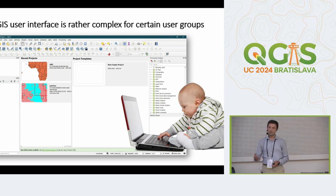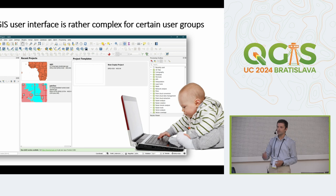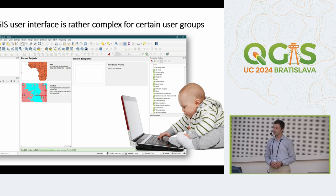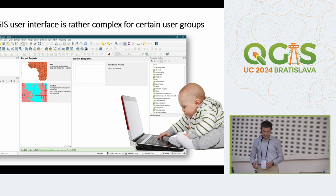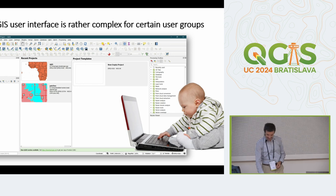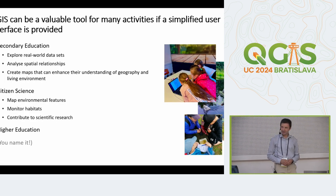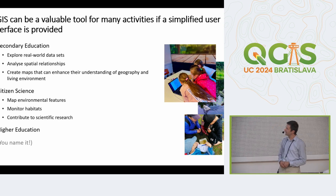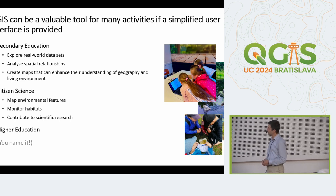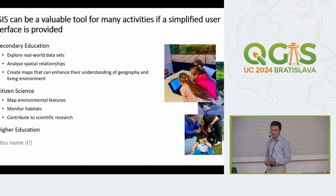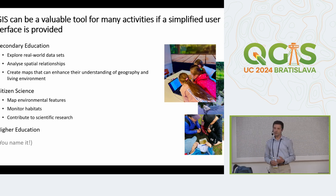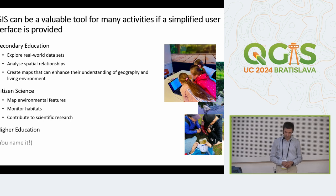But in fact, for children around 12 or 13 years old, or elderly people taking part in citizen science activities, if their experience with software applications is limited, then it is a little bit complicated. Our target was specifically secondary education, so that we enable them to explore real-world datasets, analyze spatial relationships, and create maps that can enhance their understanding — as support to the courses they take, but also as additional activities like citizen science, which is becoming more and more common.